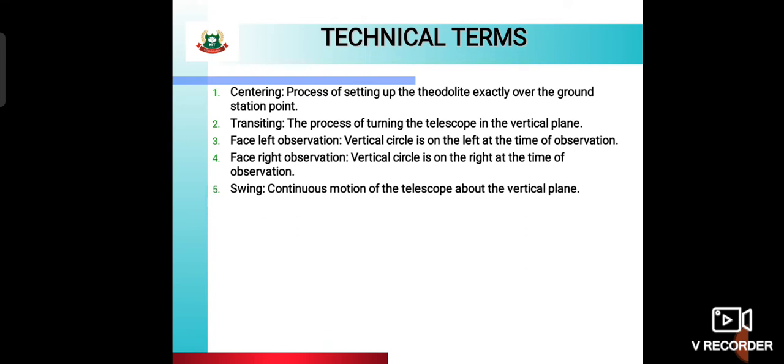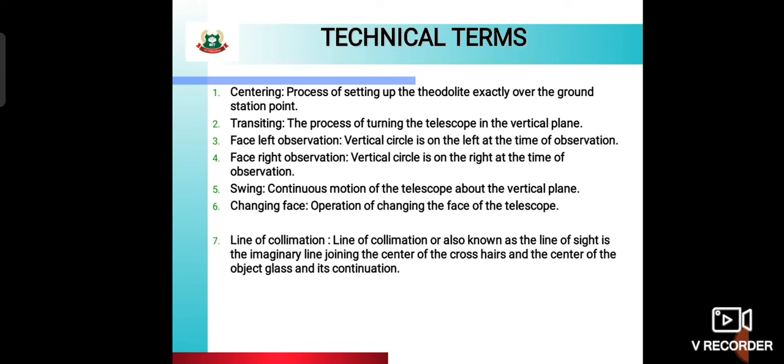Swing means the telescope is in continuous motion, rotating about the vertical axis — this is called swing. Changing face means the operation of changing the face of the telescope; that is, if we change the face of the telescope for taking readings, we call it changing face.